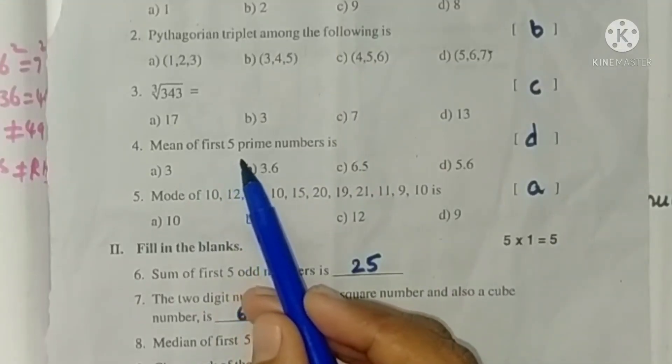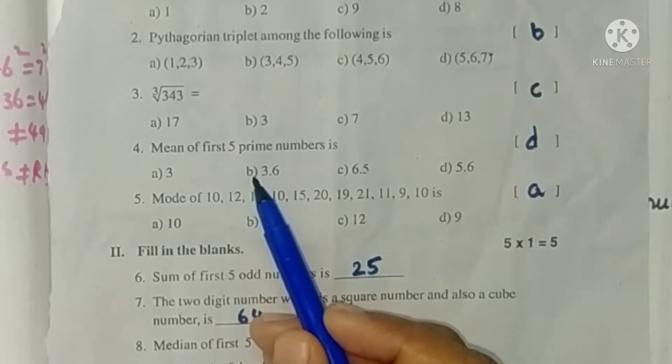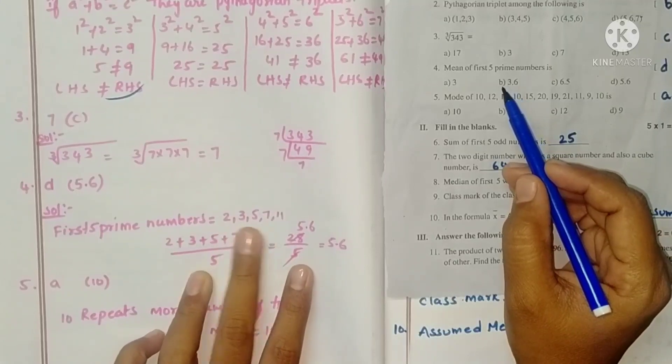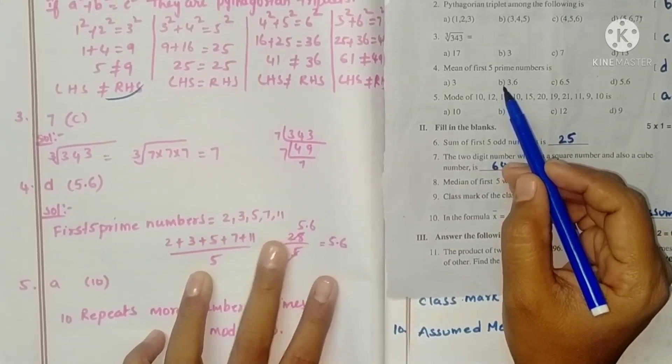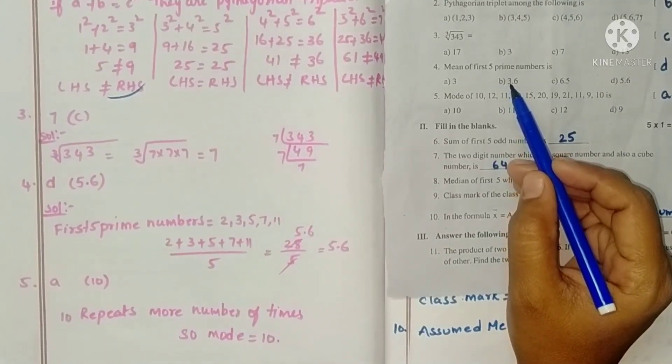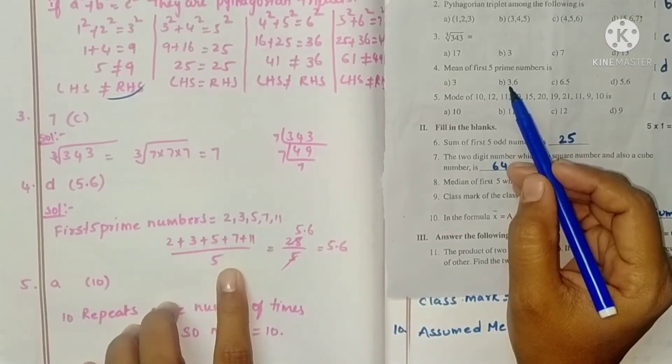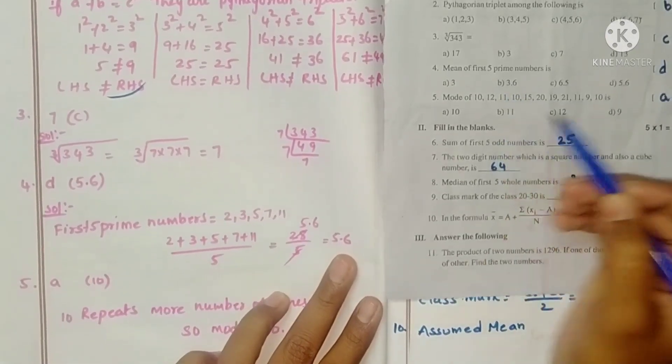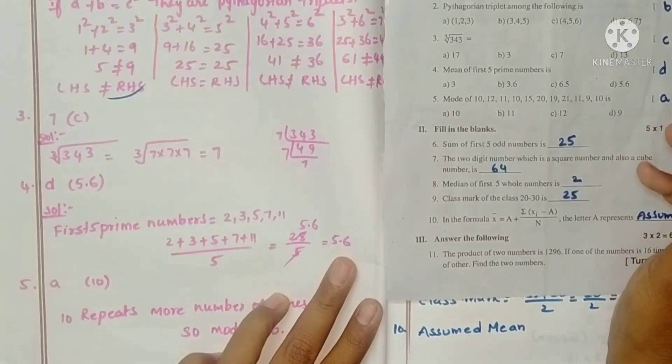Next, mean of first 5 prime numbers. First 5 prime numbers are 2, 3, 5, 7, 11. What is mean? Sum of observations by number of observations. So if you calculate it will be 5.6. So here option D is correct.